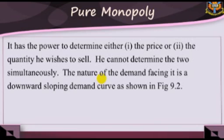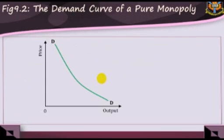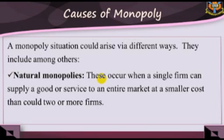Causes of monopoly. A monopoly situation could arise via different ways. They include, among others: 1. Natural monopolies. These occur when a single firm can supply a good or service to an entire market at a smaller cost than could two or more firms — that is, where there are economies of scale over the relevant range of output produced.